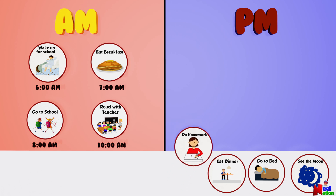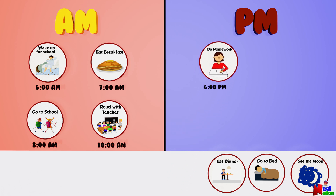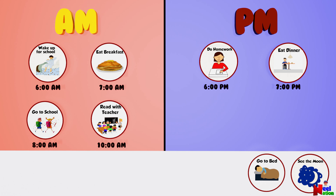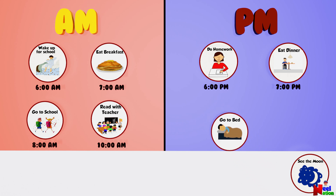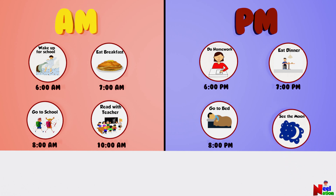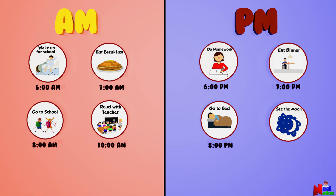When do you do your homework? In the PM — at 6 PM. When do you have dinner? At 7 PM. When do you go to bed? At 8 PM. When do you see the moon? In the PM.